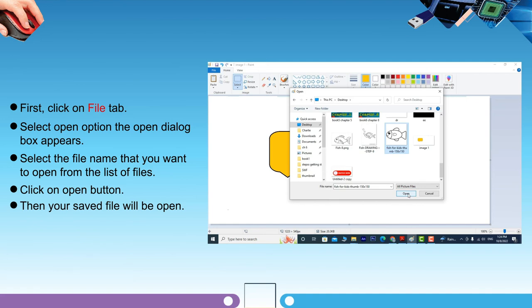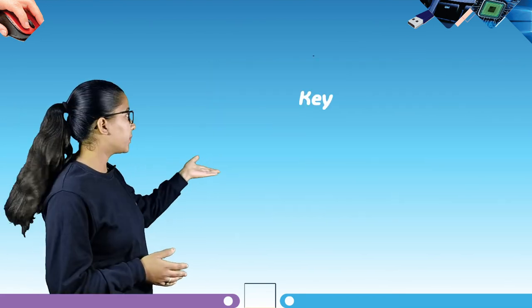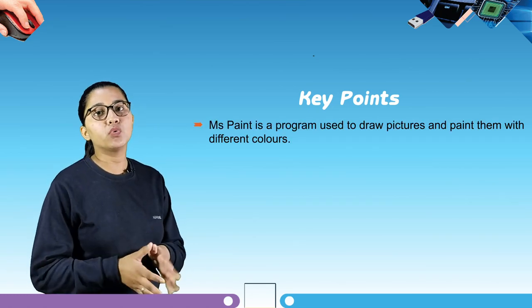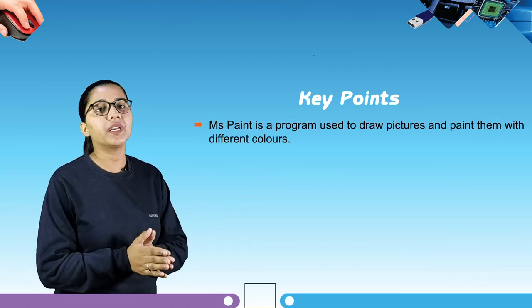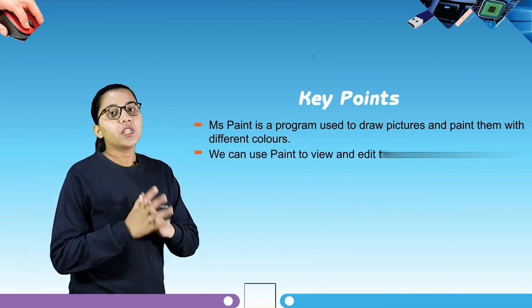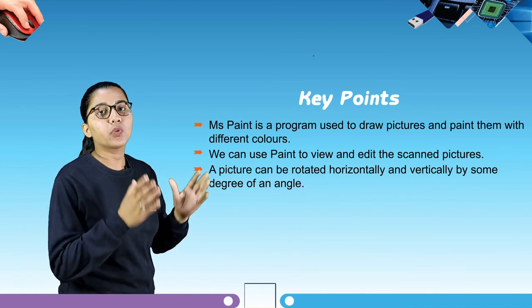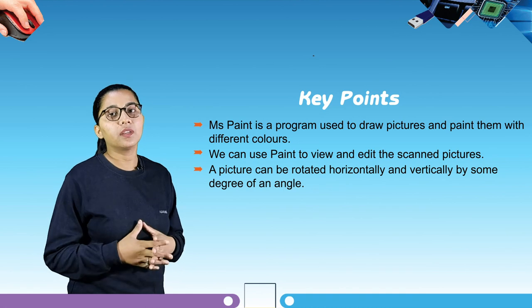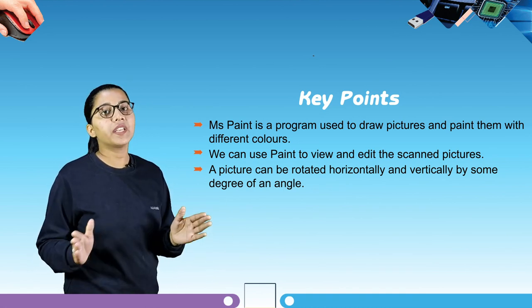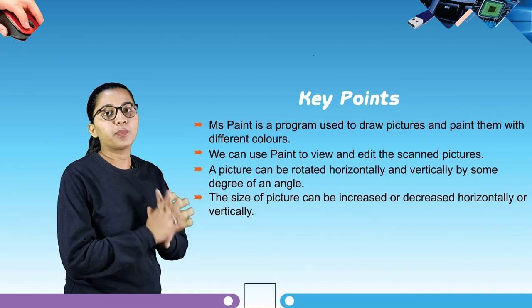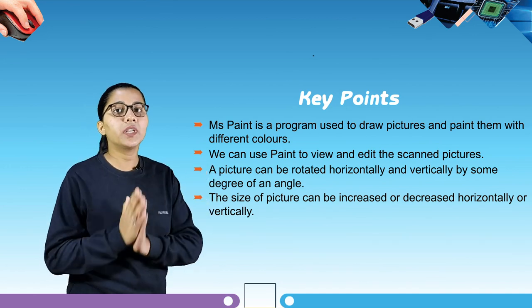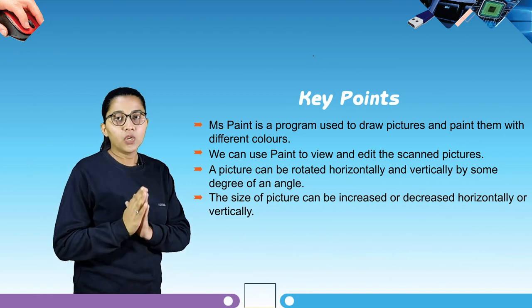Let's have a quick look at some key points from this chapter. MS Paint is a program used to draw pictures and paint with different colors. We can use Paint to view and edit scanned pictures. A picture can be rotated horizontally and vertically by some degree of an angle. The size of a picture can be increased or decreased horizontally and vertically. This is it from this chapter. Soon we are going to learn about many interesting chapters of computer. Till then, revise what we learned today. Thank you.